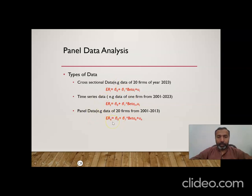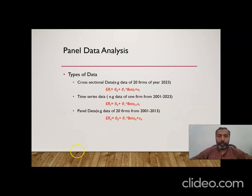The third type is panel data, also known as pool data. Here we have more than one cross-sectional unit as well as more than one year. For example, data of 20 firms from 2001 to 2013 is panel data because both the number of firms and the number of years are more than one. When its equation is written, we write both i and t subscripts with the dependent and independent variables, where i refers to the cross-sectional unit (individual, firm, country, or continent) and t refers to the time period (day, week, month, or year).